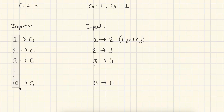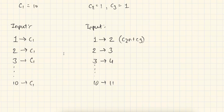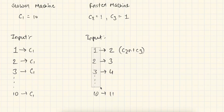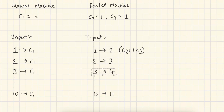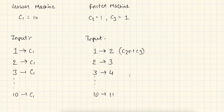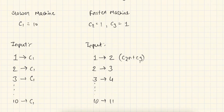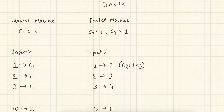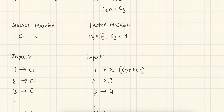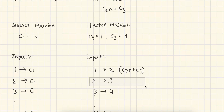We pass inputs like 1, 2, 3, and 10 to function one and can see that on every input it gives a constant amount of time — for input size 1, 3, or 10, it always takes 10 units of time. For function two, if we pass input 1, it takes 2 units of time; input 2 takes 3 units; input 3 takes 4 units; and input 10 takes 11 units. This is calculated by substituting c2=1 and c3=1 into the expression c2n + c3, giving n+1 for each input.